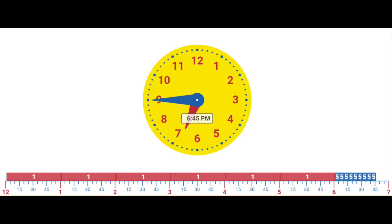A common misconception related to time is when a student confuses the minute and hour hands on an analog clock. For example, when shown 6:45 on an analog clock, the student may state that the time is 6:09, 9:06, or 9:30. To help students overcome this misconception, use geared clocks so that students can see the relationship between the movement of the hour hand and the minute hand.